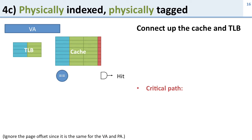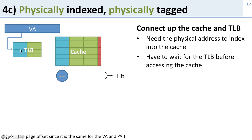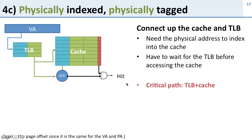How about physically indexed, physically tagged (PIPT)? To hook this up we go through the TLB first to get the physical address, then put that into the cache to get a physical tag, then compare the tag with the physical address from the TLB along with the valid bit. The problem with this design is the critical path: we must go through the TLB first, then through the cache — the critical path is TLB time plus cache time, making it a slow design.